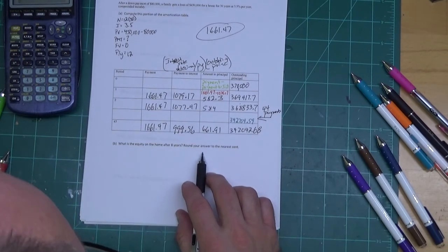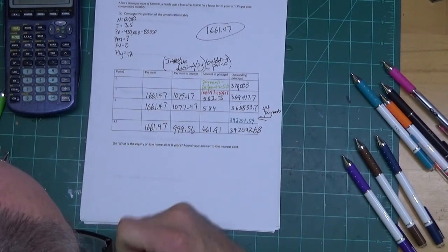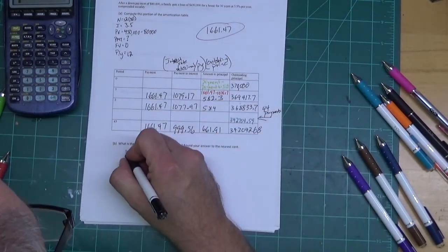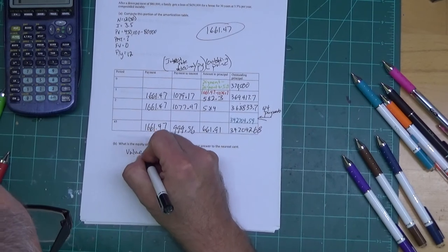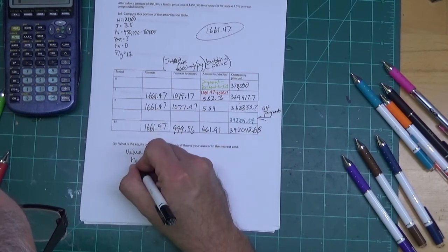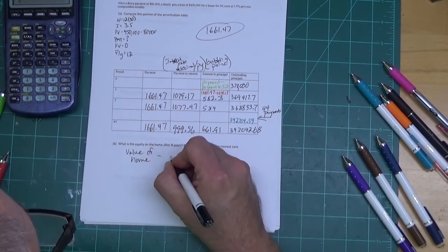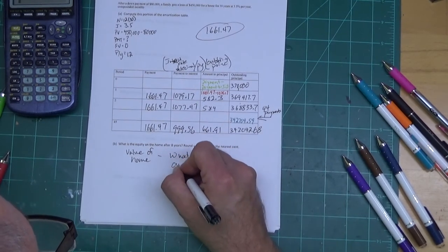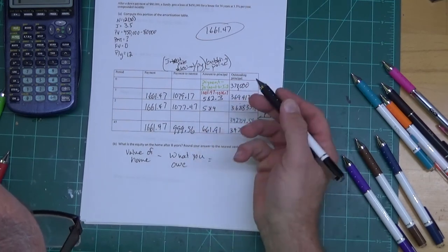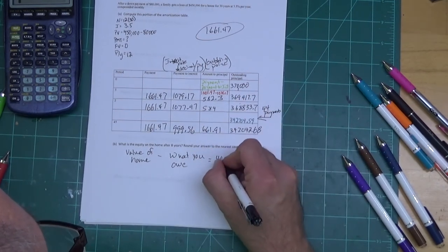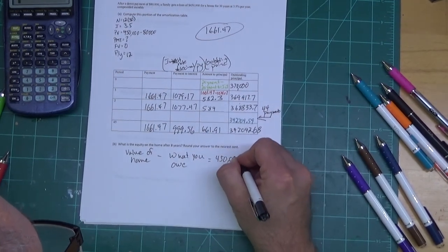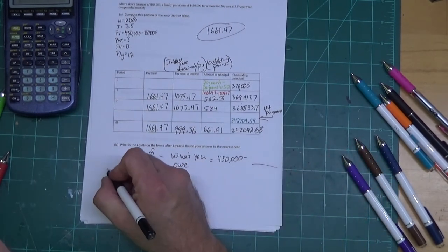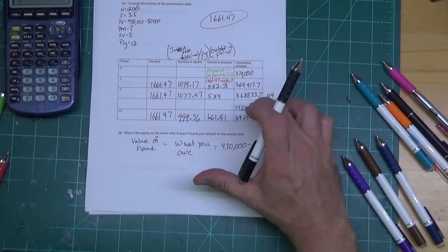I'm going to go ahead and do part B on this. Part B: What is the equity on home after eight years? Round your answer to the nearest cent. Okay, equity is the amount of money you own in the home, so it'll be the value of the home minus what you owe. And we know the value of the home because we bought it - it's $450,000.